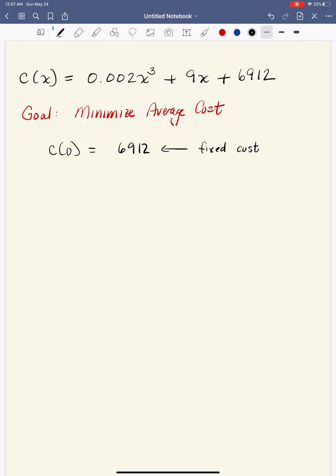That's what kind of makes cost a particular item of interest when we're doing some analysis. So our goal in this problem is to minimize average cost. Now, remember that average cost, which I'm going to call AC,